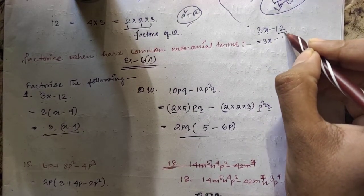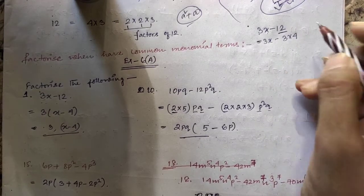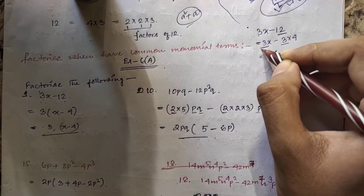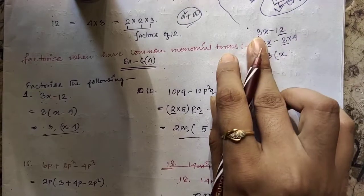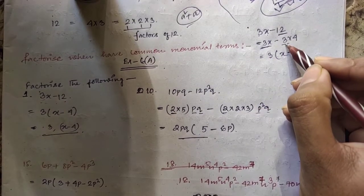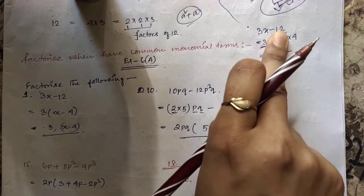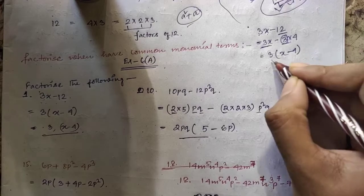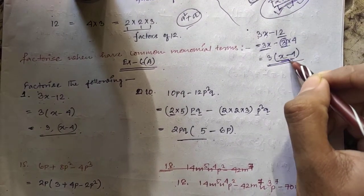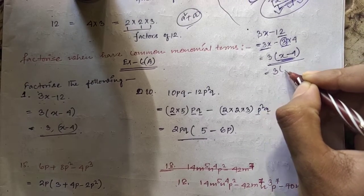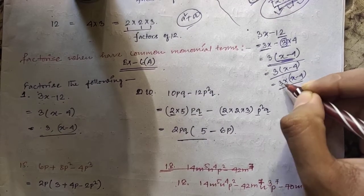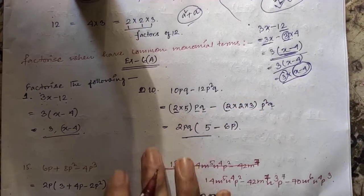For 3x − 12: in the first term we have 3, and 12 can be written as 3 × 4, so 3 is present in both terms. Taking 3 as common, we get 3(x − 4). After this, no further common factor is possible since 3 is prime. So the factors of 3x − 12 are 3 and (x − 4).